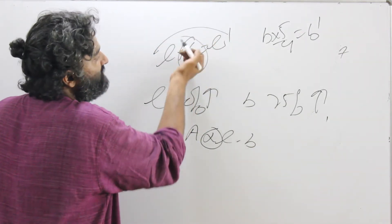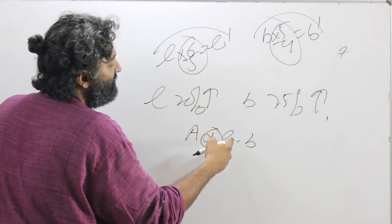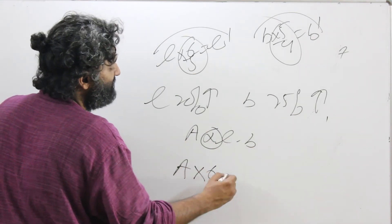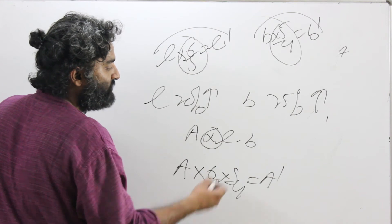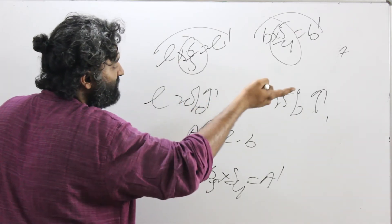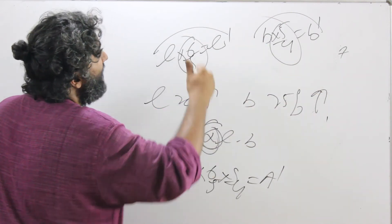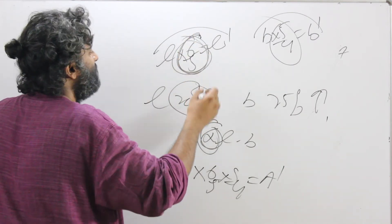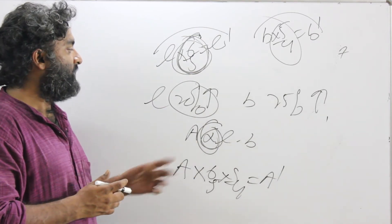Old breadth to new breadth, we multiply by 5 by 4. So the multiplying factors for length and breadth get applied directly to the area: A into 6 by 5 into 5 by 4 equals A dash. We are removing the full equation and doing it in our head. The multiplying factor for length and breadth each get multiplied to the area, and we get those multiplying factors by converting the percentage information into fraction form.